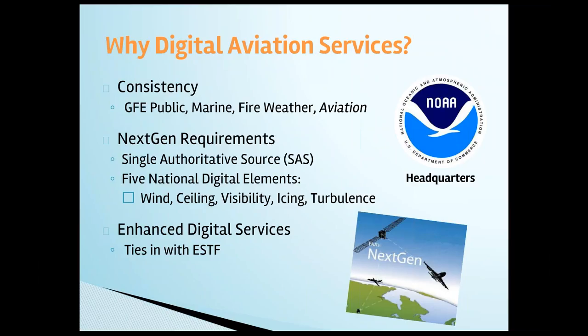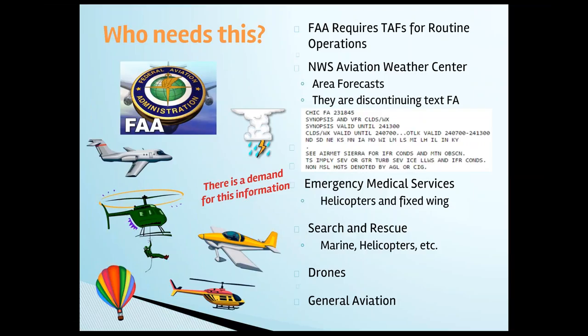It's time to add aviation. This supports the FAA NextGen requirements with the weather service being a single authoritative weather source. What it requires is five national digital elements. What we at the weather service offices can do is offer ceiling and visibility forecasts. This will tie in closely with enhanced short-term services, also called enhanced digital services. The FAA needs this because it satisfies the requirement for us to create routine tasks.